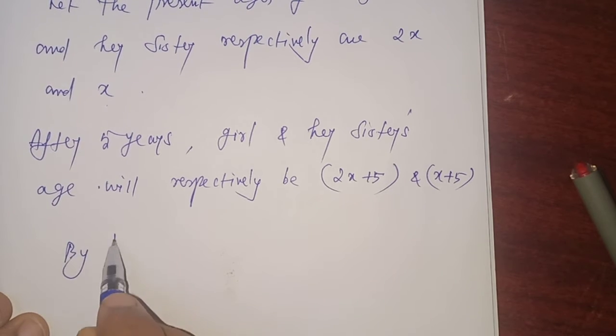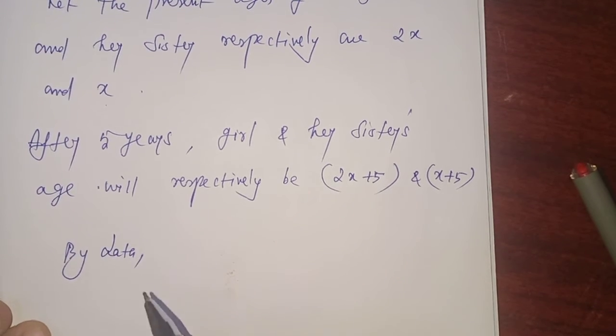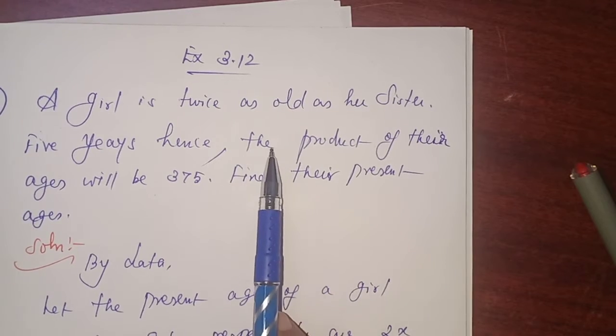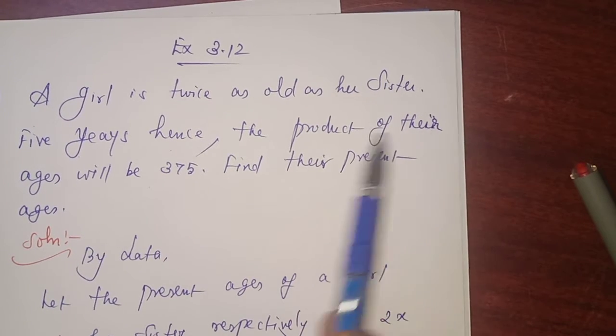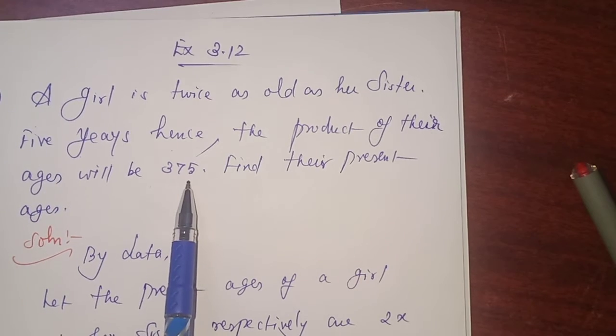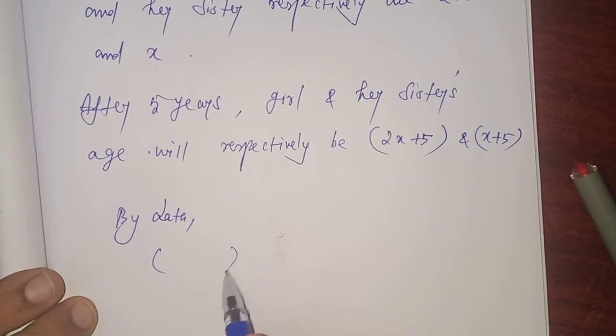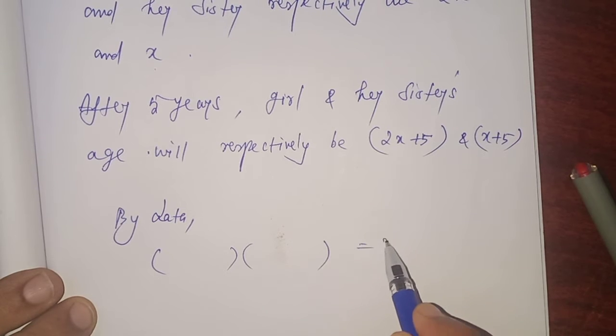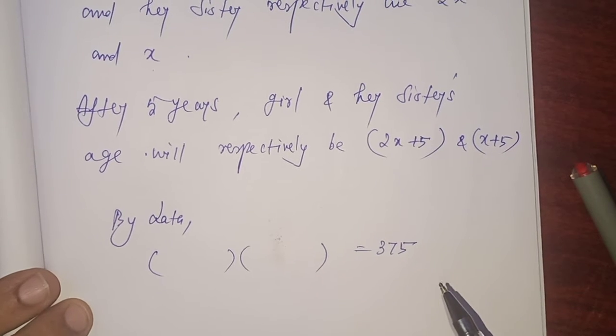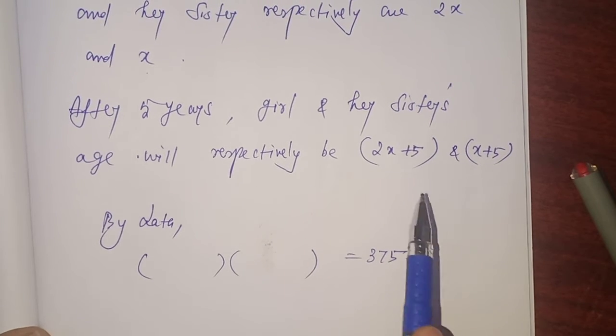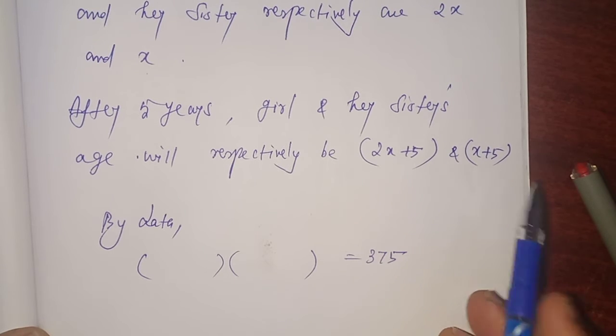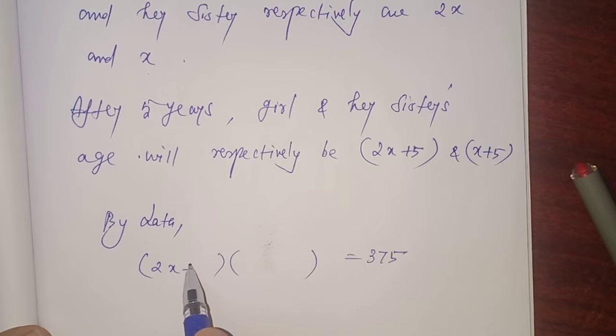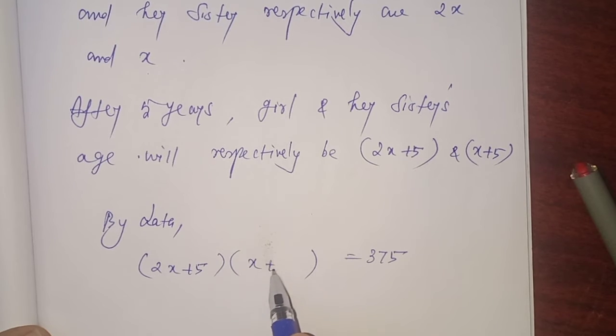By data, what is the condition given? After 5 years, I mean 5 years hence, the product of their ages will be 375. After 5 years, what are the ages? 2x plus 5 and x plus 5.